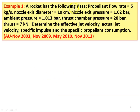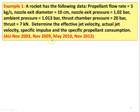Example number 1: A rocket has the following data — propellant flow rate is 5 kilograms per second, nozzle exit diameter 10 centimeter, nozzle exit pressure 1.02 bar, ambient pressure 1.013 bar, thrust chamber pressure 20 bar, thrust produced is 7 kilo Newton. Determine the effective jet velocity, actual jet velocity, specific impulse, and specific propellant consumption. This question is from November 2003, November 2009, May 2010, and November 2013.